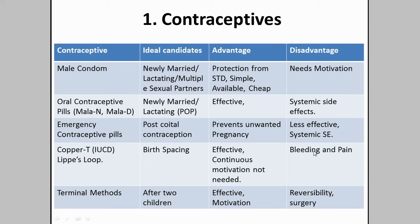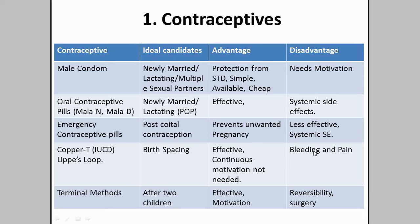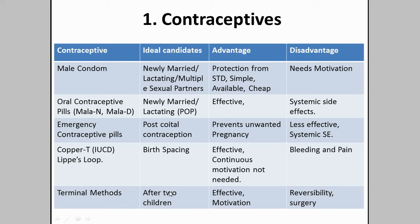Intrauterine devices: first generation are plain inert devices; second generation are copper- or silver-containing; third generation are hormone-releasing. The main disadvantage is bleeding and pain. Terminal methods — vasectomy and tubectomy — are generally recommended after two children as a permanent method of sterilization. Models are usually kept in exams. The disadvantage is limited reversibility and the requirement for surgery.